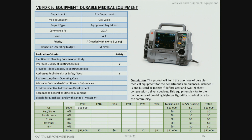A new FY17 general fund item covers the purchase of durable medical equipment for the fire department, including cardiac monitors, stretchers, and an automatic CPR compression delivery device — totaling $61,000. These items are typically bundled with vehicle purchases, but are being separated out this year.